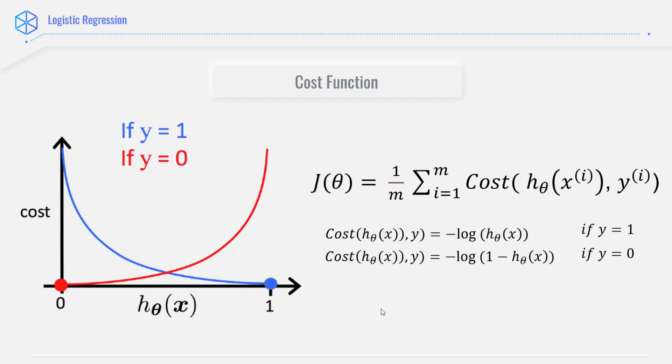If you recall, in linear regression, we had the gradient descent. Similarly, in the case of logistic regression, we write a prediction function. So a prediction function in logistic regression basically returns the probability of an observation being positive, that is true or yes. We call this class 1.